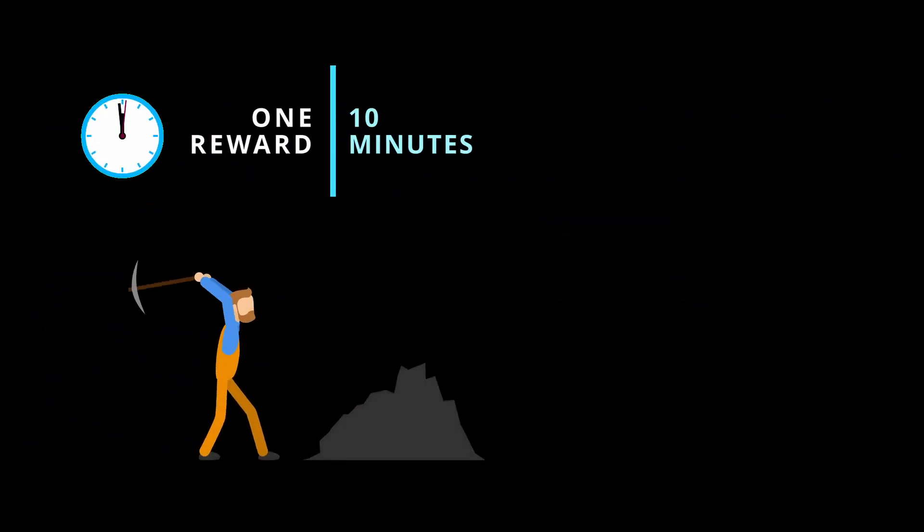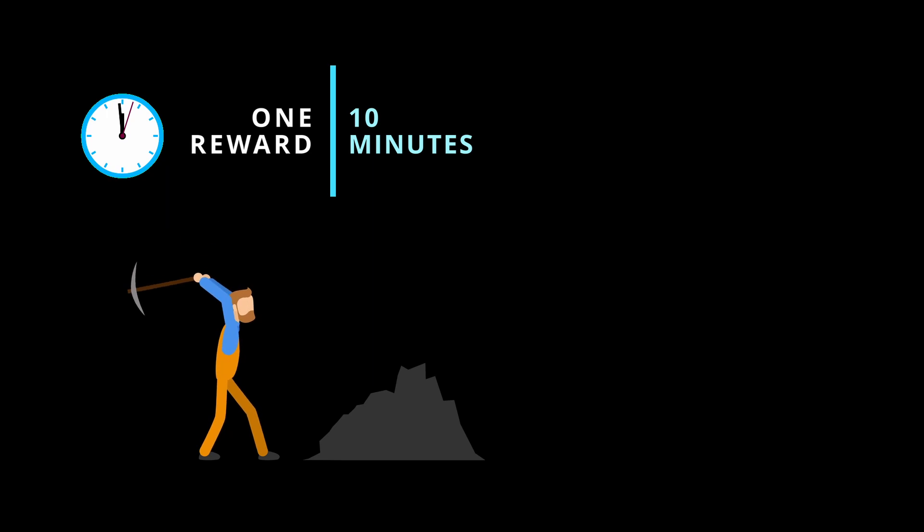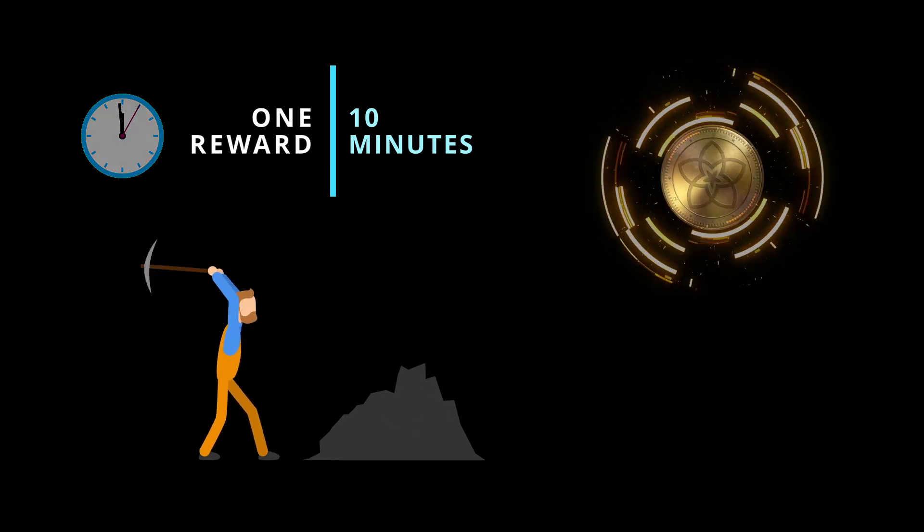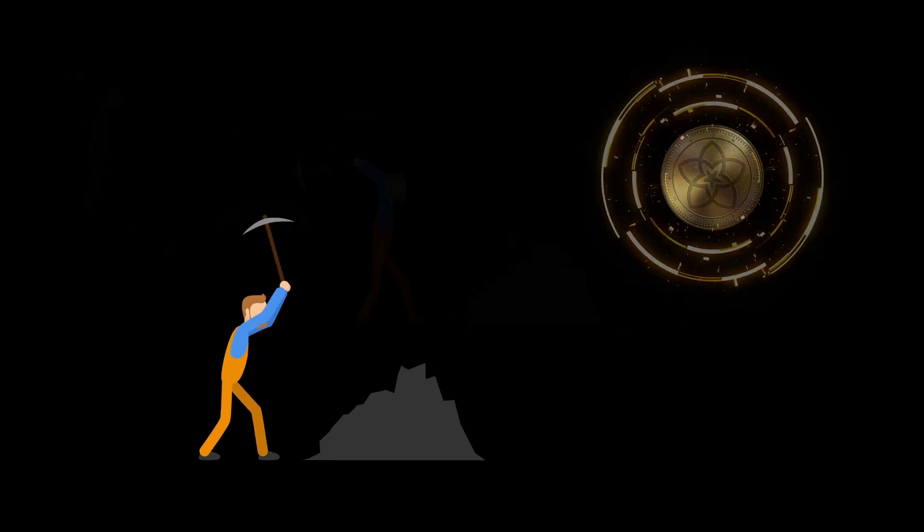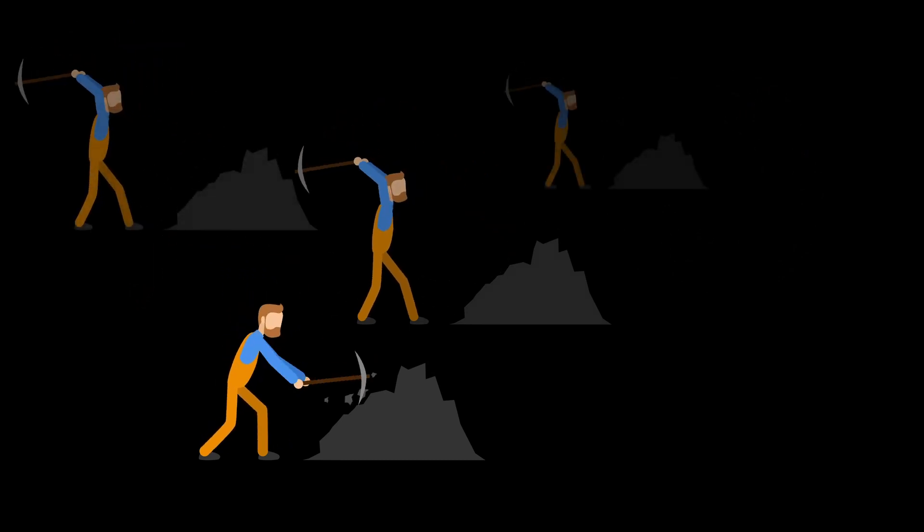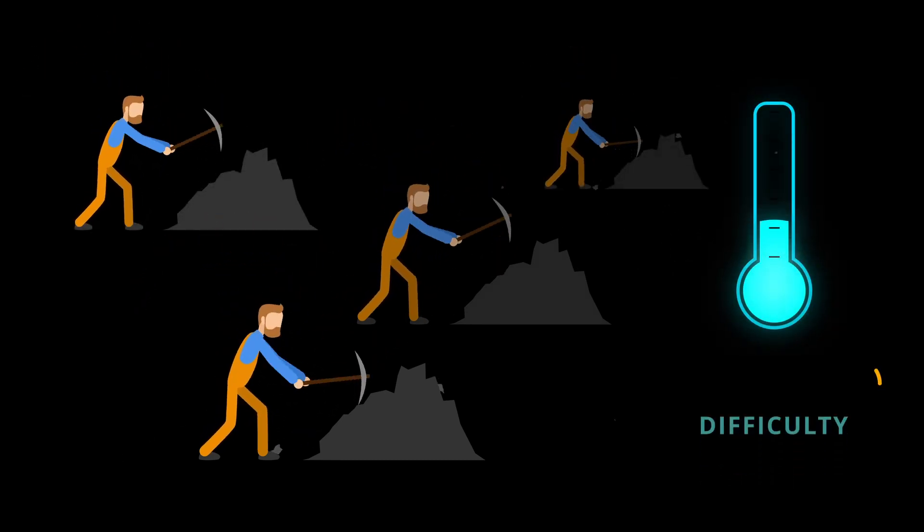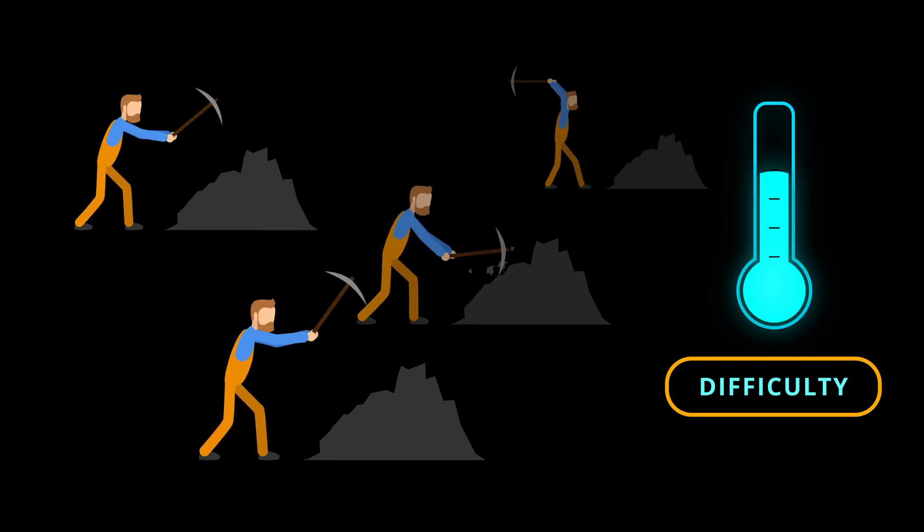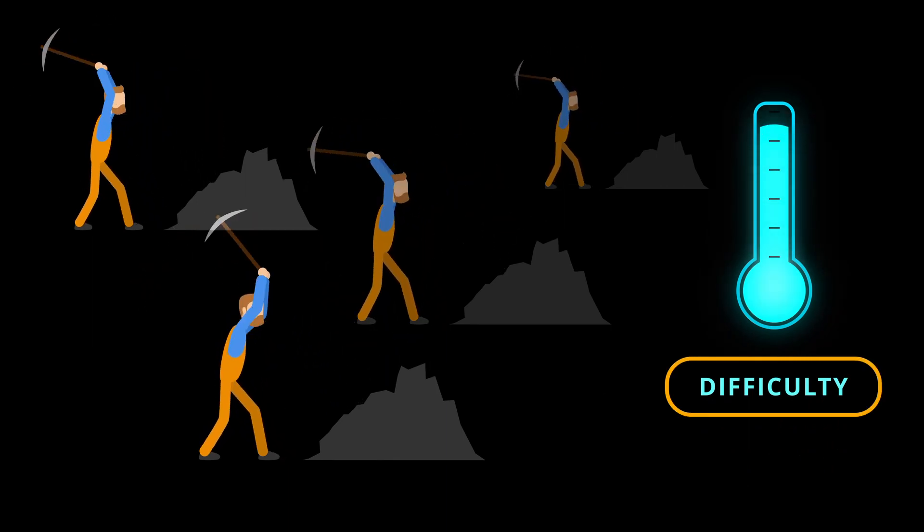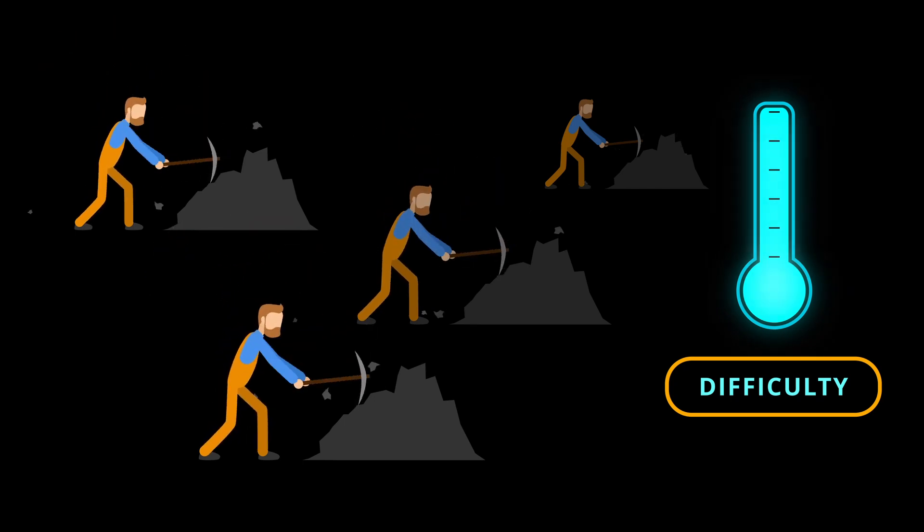By design, a random miner will find a solution to the proof of work challenge every 10 minutes on average to compensate for the random fluctuations in the number of miners and changes in hardware speed. The proof of work difficulty changes accordingly, aiming to keep the mining supply at one reward every 10 minutes.